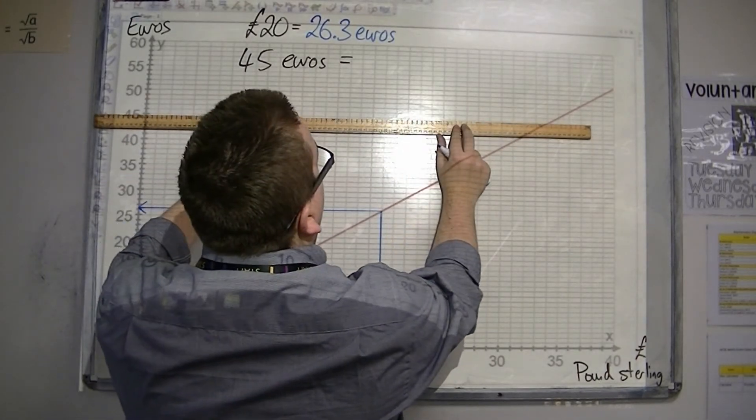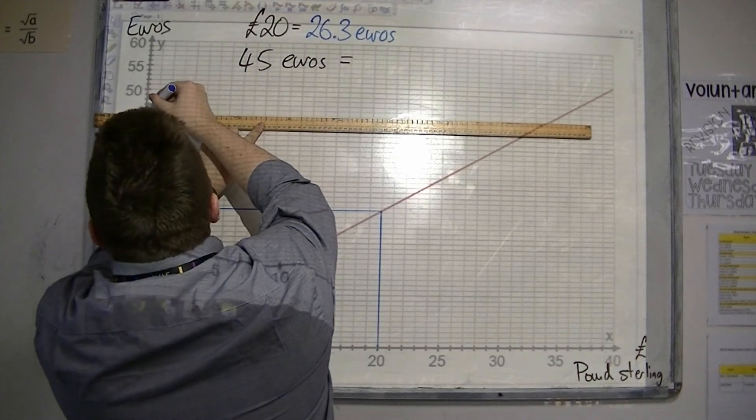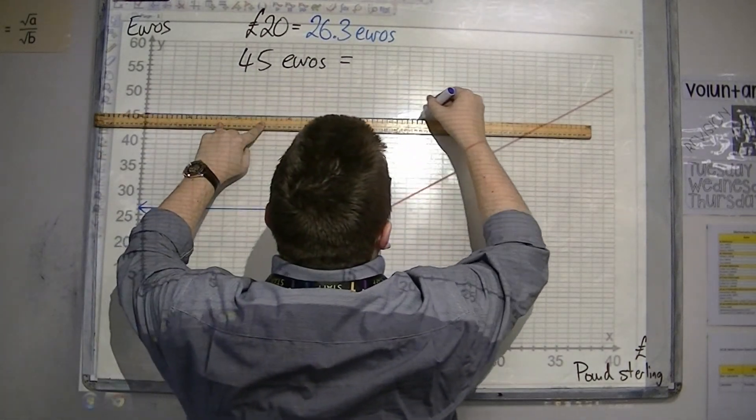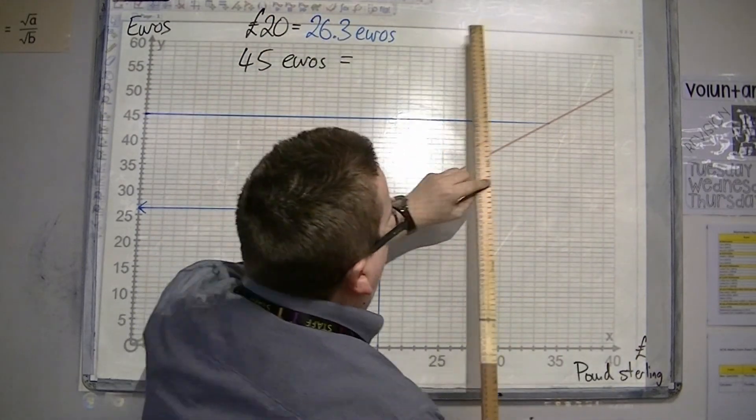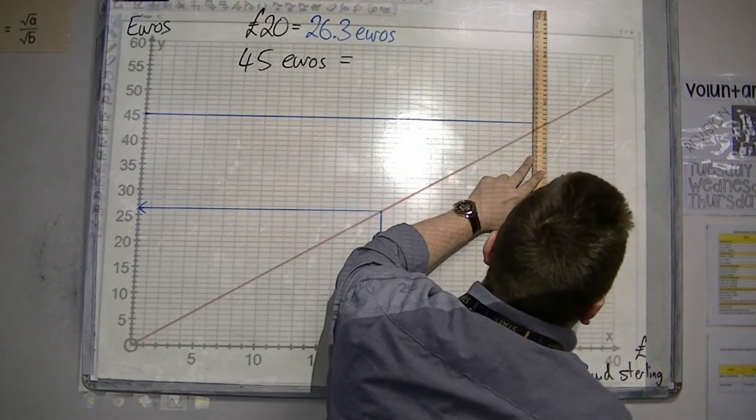okay, so I'm going to draw a similar line, but I work from this direction this time. So, 45 along to my line, and then straight down to pounds.